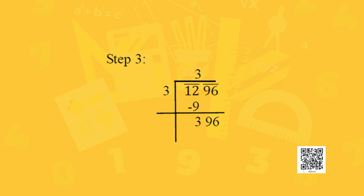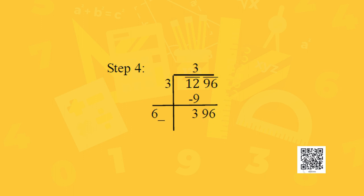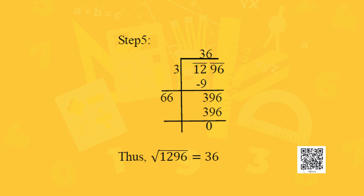Bring down the number under the next bar, which is 96, giving new remainder 396. In step 4, double the divisor 3 to get 6, and write a blank to its right. In step 5, guess the digit: 66 × 6 = 396, leaving remainder 0. Since there are no other numbers to bring down, the square root of 1296 is equal to 36.